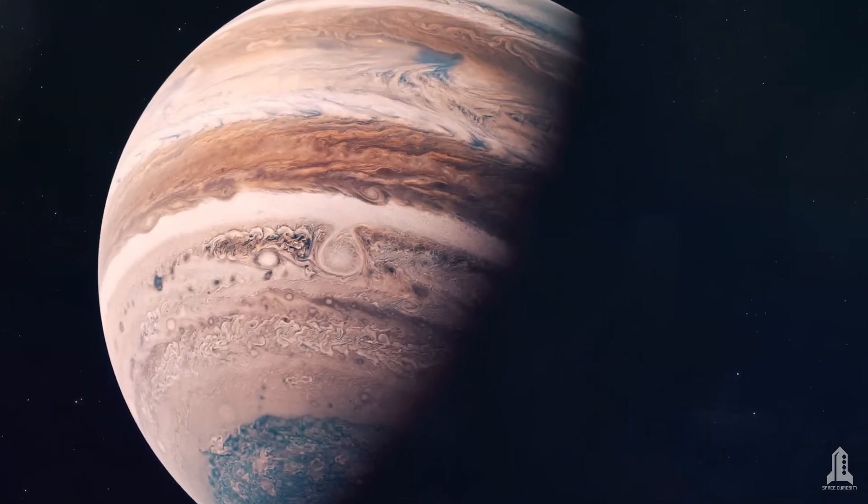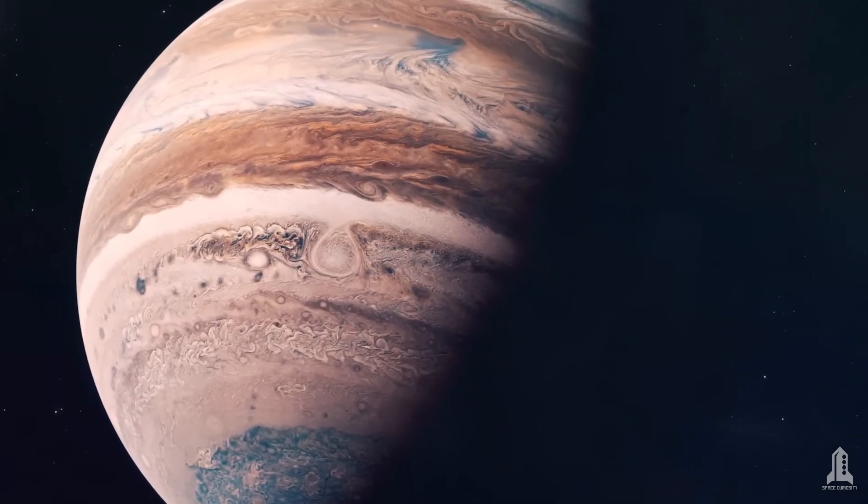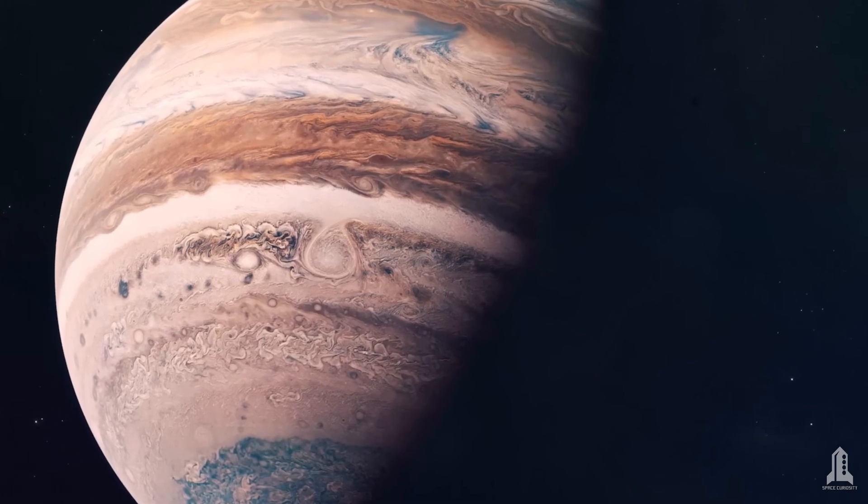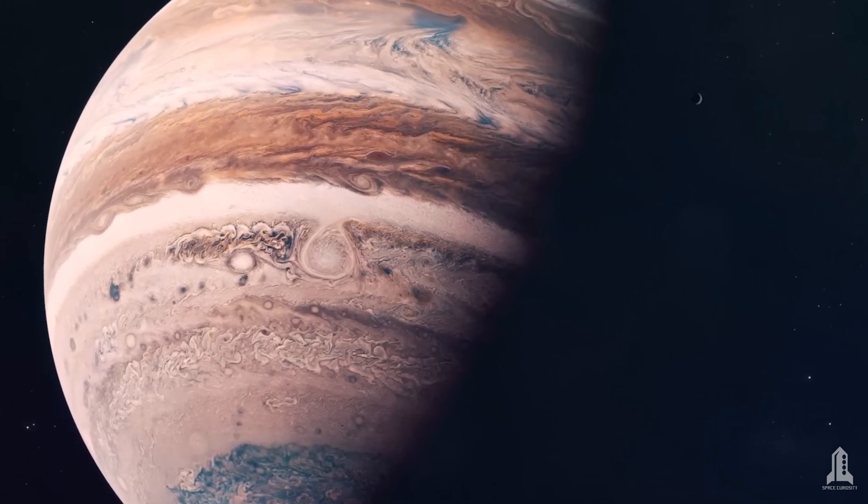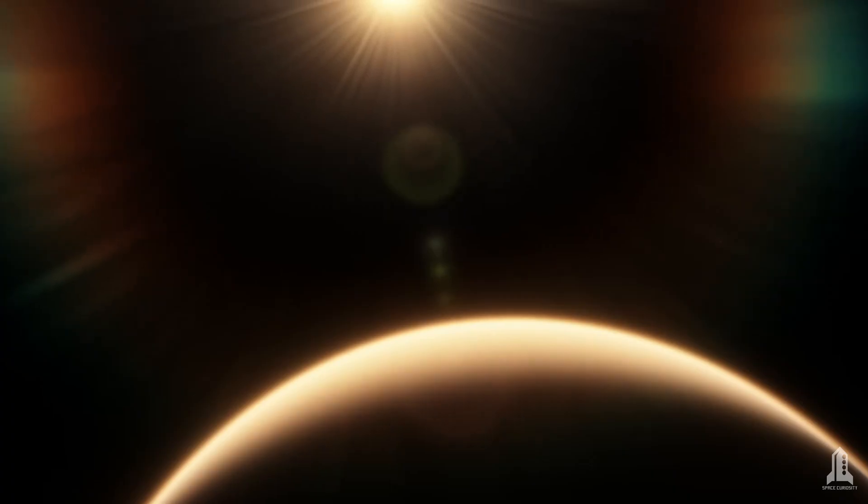Being a gas giant, it doesn't have a solid surface to walk on. Additionally, temperatures are quite cold, dropping well below freezing, with an average temperature around minus 73 degrees Celsius. This is because it receives only about 20% of the light Earth gets from the sun, despite its two suns.